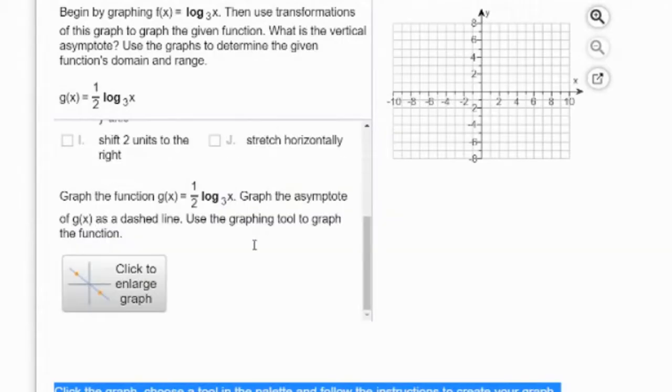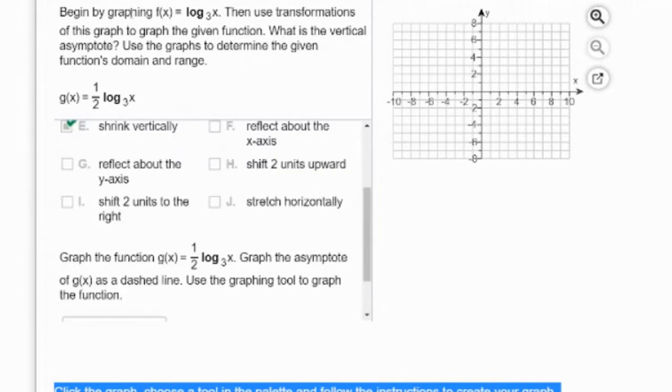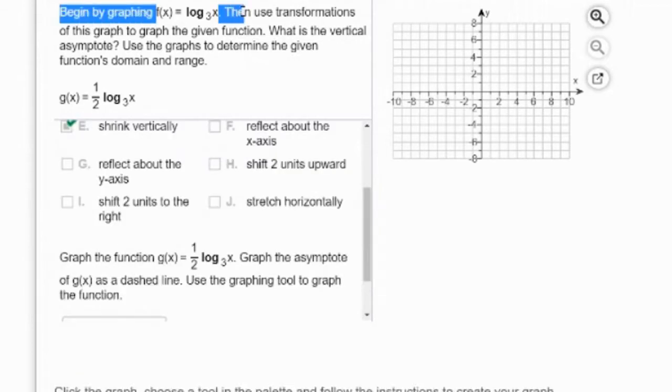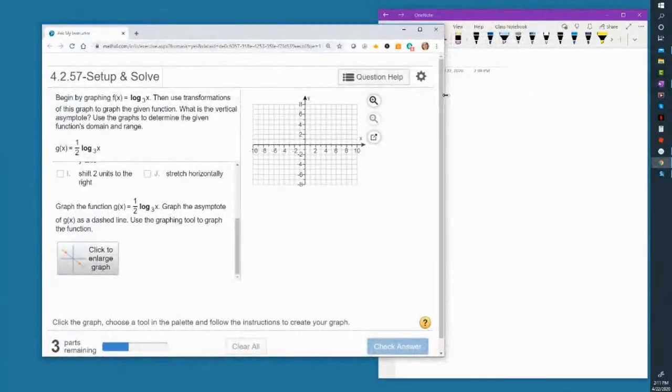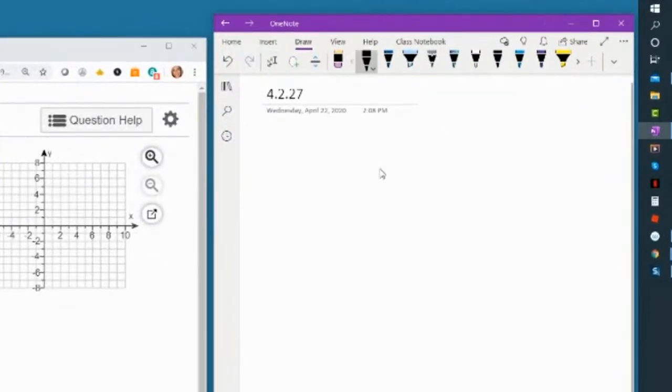And then it asks you to graph the function g(x) = 1/2 log base 3 of x. The reason why in the beginning it says begin by graphing f(x) = log base 3 of x is they want you to use transformations to get the graph. On your paper at home, you're going to graph f(x) = log base 3 of x.